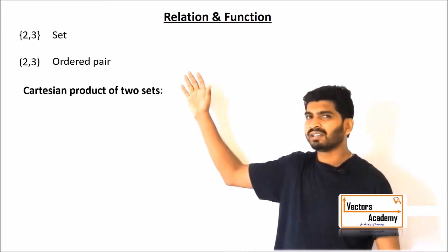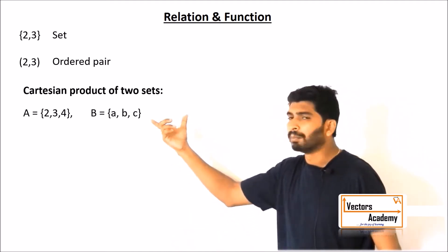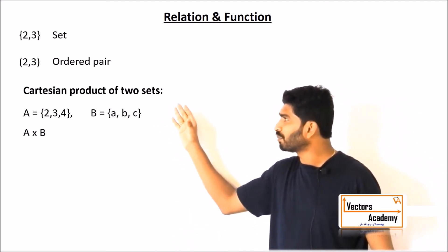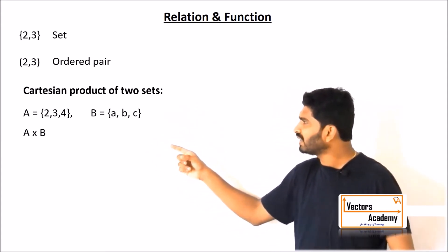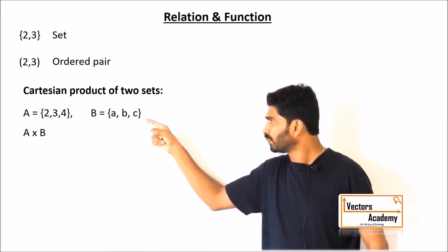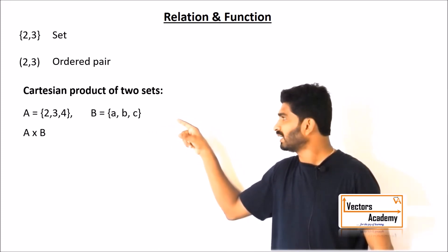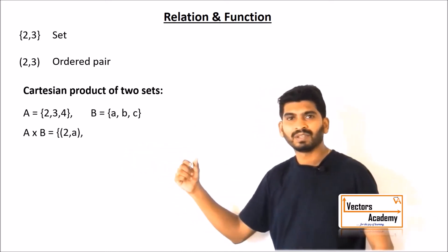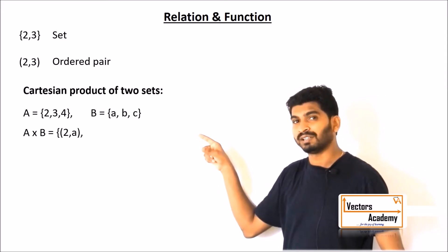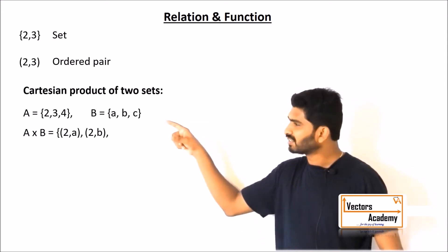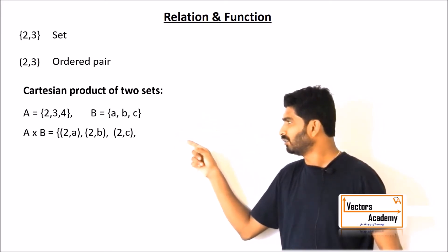Now let's look at where the ordered pair is used. Consider these two sets A and B. If you need to find the Cartesian product of two sets, we take the first element from set A, that is 2, and put it in an ordered pair with the first element of set B, that is 'a', giving us (2,a). Similarly, the first element of set A with the second element of set B gives (2,b), and with the third element of set B gives (2,c).